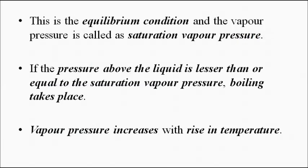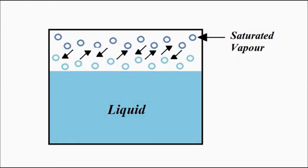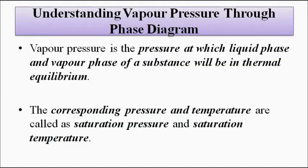We can also understand the concept of vapor pressure through the phase diagram. Vapor pressure is the pressure exerted by vapor molecules on top of the liquid, and we can also define it as the pressure at which the liquid phase and vapor phase of a substance will be in thermal equilibrium — meaning the rate of conversion of liquid to vapor and vapor to liquid are equal. That corresponding pressure and temperature are called saturation vapor pressure and saturation temperature.